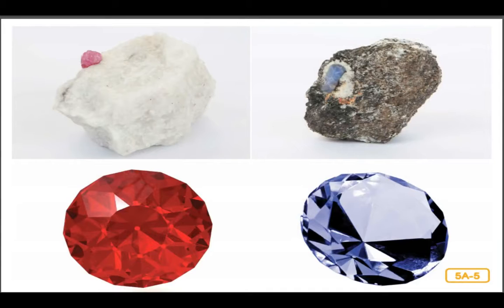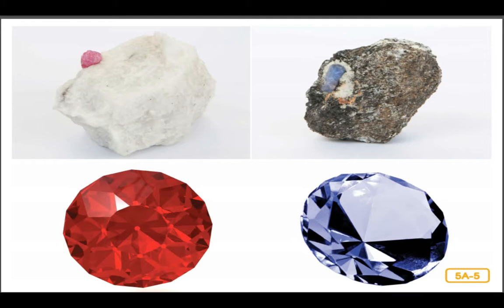Examples of rare gemstones are some varieties of corundum, a mineral composed mostly of aluminum and oxygen. A gemstone is a stone that is cut and polished to be used in jewelry. Red corundum is known as ruby, and blue corundum is known as sapphire. Rubies and sapphires are among the most beautiful mineral crystals on Earth.